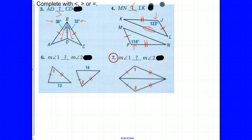Question number six uses the converse of the hinge theorem. Same setup: one pair of congruent sides, a second pair of congruent sides. The question asks about angle measurements. Side 13 is across from angle one; side 14 is across from angle two. Since 13 is less than 14, angle one is less than angle two. For question number seven, we have two pairs of congruent sides and the third side is shared, meaning angles one and two are equal. These two triangles are congruent by side-side-side, so angles one and two are corresponding angles and are equal to each other.